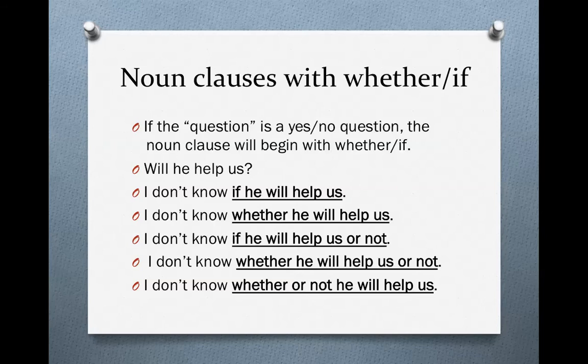We could say 'I don't know whether he will help us' — same meaning. If or whether, it doesn't matter, exactly the same meaning. We could also say 'I don't know if he will help us or not.' Sometimes we add the phrase 'or not' at the end of the clause. We also do this with 'whether': 'I don't know whether he will help us or not.' Now, only with 'whether' — you can't do this with 'if' — but with 'whether' you can say 'I don't know whether or not he will help us.' All of these sentences mean exactly the same thing, there is no change in meaning, and they are all equally common in English.